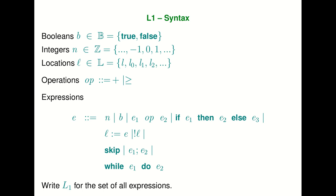Once we've got locations, integers, and booleans — the primitives of the language — we also need to be able to do things with them. We'll have operations like addition and comparison; in fact, we'll only have addition and greater than or equal to. The expressions are going to be our integers and booleans as basic expressions, and we can combine them: if we have two expressions e1 and e2, we can form e1 op e2. Since op is either plus or ≥, e1 plus e2 is an expression and e1 ≥ e2 is an expression.